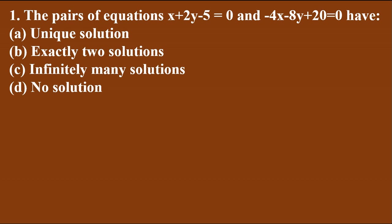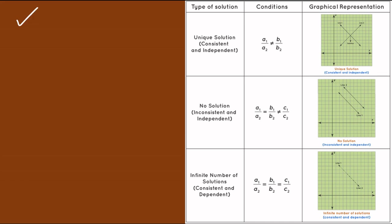The first topic we choose is pair of linear equations. Each pair has two equations and can have exactly one unique solution, infinitely many solutions, or no solutions at all. This type of problem is straightforward — just memorize one table and you can crack all the bits in this chapter.